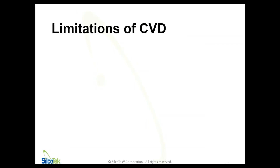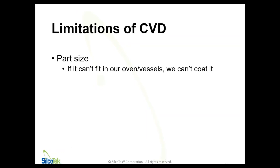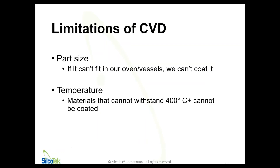It would be wrong of me to not talk about some of the limitations of the CVD process — we can't do everything. One is part size: if it can't fit in one of our ovens or vessels, we can't coat it. Of course, if the opportunity is big enough, we can fabricate what we need to make it happen — the CVD process is very scalable in that sense. But if you're just looking for a one-off coating and it's not something we can accommodate, then we won't be able to coat it. Temperature is another limitation: we're going up to 400 or 450°C, so anything that can't withstand that temperature can't be coated — a lot of polymers, plastics, things like that.